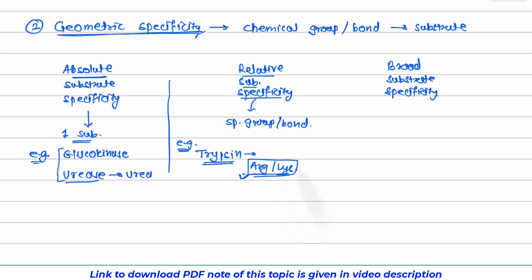Arginine and lysine both have similar type of group and that is a basic group. Both are classified under basic amino acid. So here we can say that trypsin has a specific group related specificity.